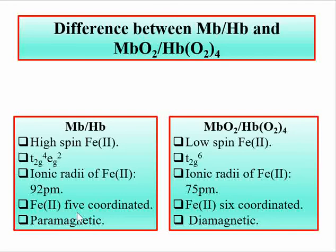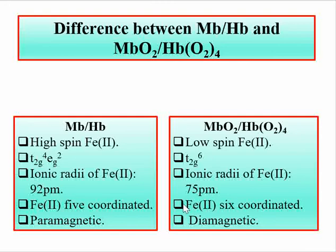Due to the absence of oxygen in the deoxyform, the Fe2+ center is 5-coordinated and has a distorted octahedral geometry — that is, square pyramidal. In this case, the iron center is not in the plane of the porphyrin ring. In the oxyform, Fe2+ is 6-coordinated because oxygen also binds to the iron center, making the environment around Fe2+ octahedral. Due to the absence of any unpaired electrons in the oxyform, it is diamagnetic, while the deoxyform is paramagnetic due to the presence of unpaired electrons.